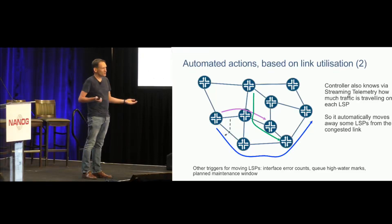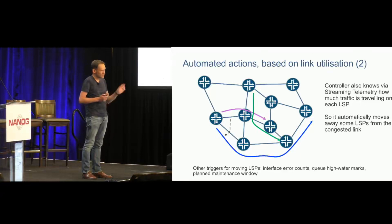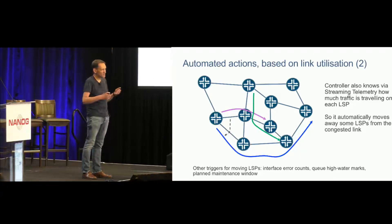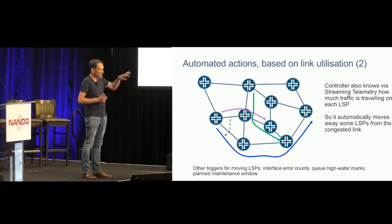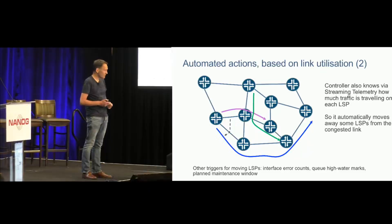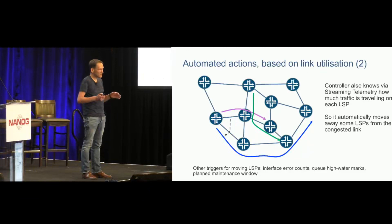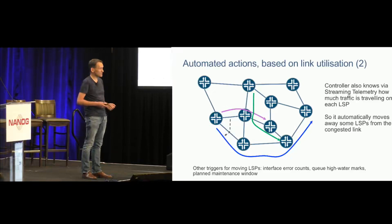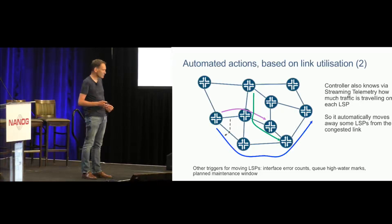Traditionally this type of traffic engineering has been done manually — quite labor-intensive. Somebody has to realize a link is approaching congestion, recompute paths, log into ingress routers, and add loose hops to pin the LSP away from the congested area. After months of this you end up with a rat's nest of LSPs pinned around the network in various ways, and unraveling it is messy because the original reason for pinning may have gone away. Having a controller do this entirely automatically makes a lot of sense.